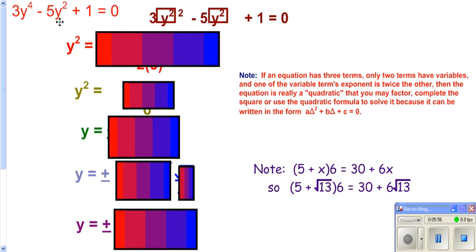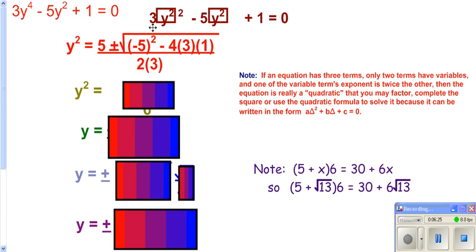This equation is quadratic in form because it has three terms, two with variables, where one exponent is double the other. We can solve it using the quadratic formula or by factoring. Not all things factor — in this case it doesn't factor, but you wouldn't know that unless you tried. When you write it in quadratic form, your a is 3, your b is what's in front of your variable to the first power, and your c is what has no variable. Plugging in a=3, b=−5, and c=1, it simplifies to 5 plus or minus root 13 over 6.